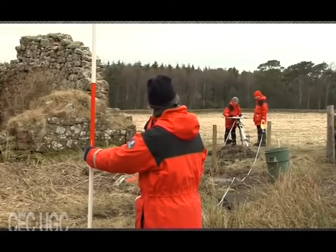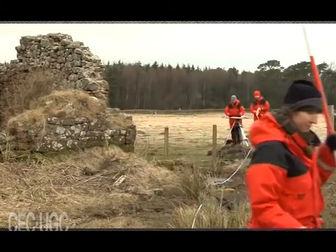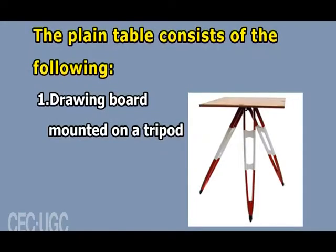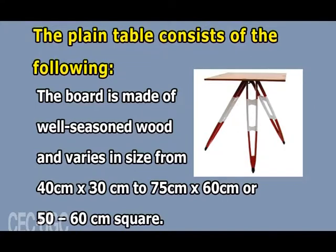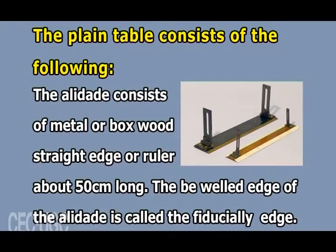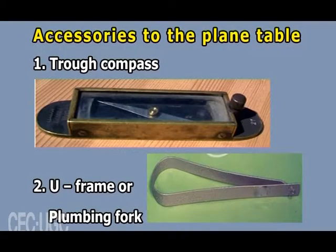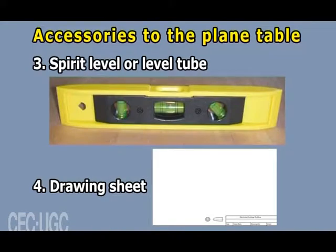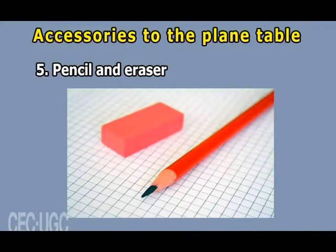Plane table surveying is a graphical method of surveying in which field work and plotting are done simultaneously in the field. The plane table consists of a drawing board mounted on a tripod. The board is made of well-seasoned wood and varies in size from 40cm × 30cm to 75cm × 60cm or 50 to 60cm square. The straight edge is called an alidade; it consists of metal or boxwood, a straight edge or ruler about 50cm long. The beveled edge of the alidade is called the fiduciary edge. Accessories to the plane table include a trough compass, U-frame or plumbing fork, spirit level or level tube, drawing sheet, and pencil or eraser.